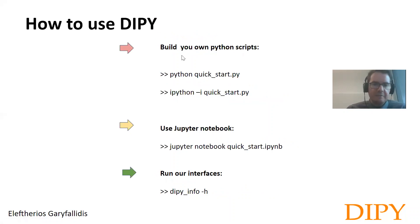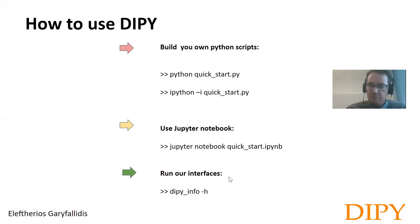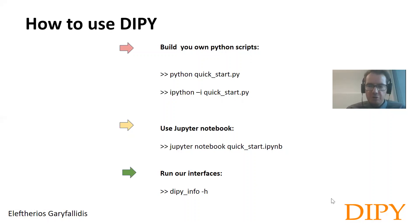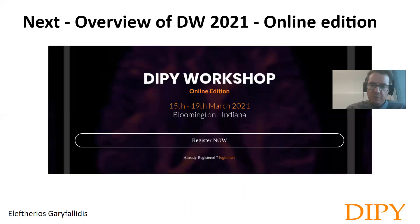How to use DiPy? You basically start by reading some of the tutorials. Then you can either build your own Python scripts — for example, you can download a tutorial and run it with Python quickstart.py or run it through IPython — or you can use a Jupyter notebook, since every tutorial has a Jupyter notebook version. Or you can run our command line interfaces, for example dipy_info -h will provide help for the command called dipy_info. We provide Python scripts, Jupyter notebook scripts, and command line interfaces. We also have a collaboration with Brainlife that provides web-based interfaces, but that will be in the next talk.